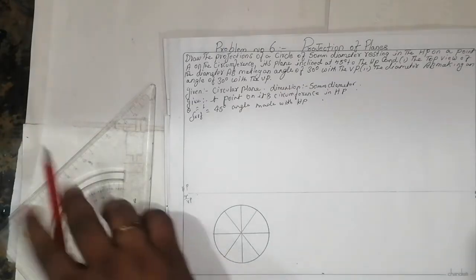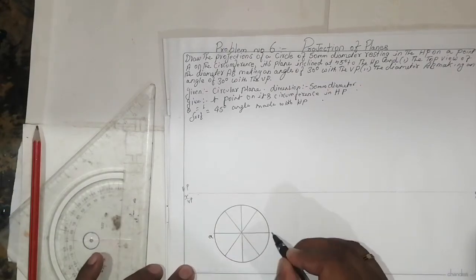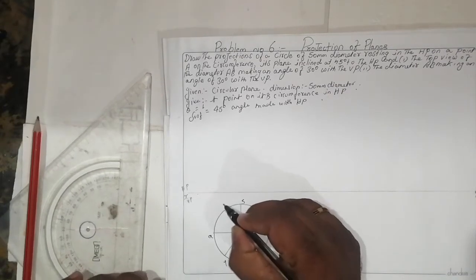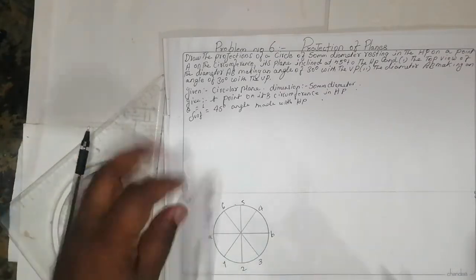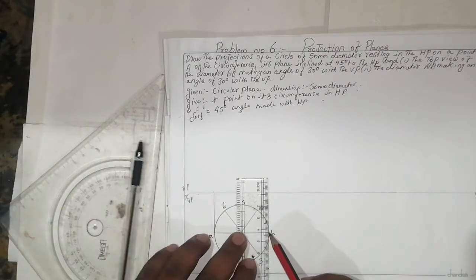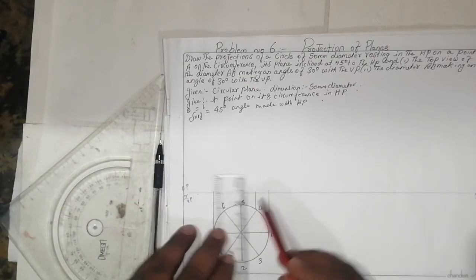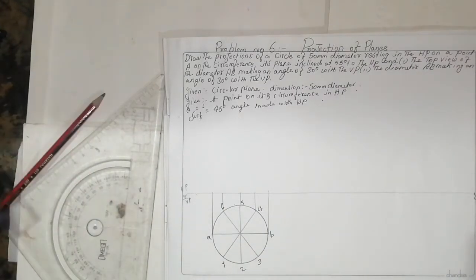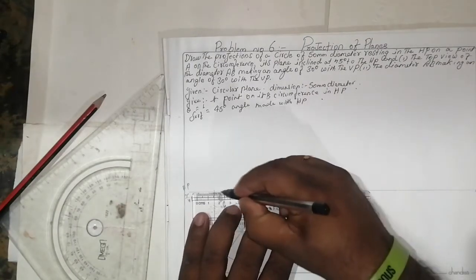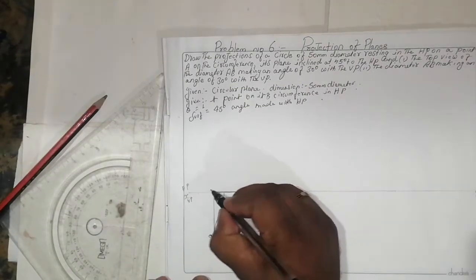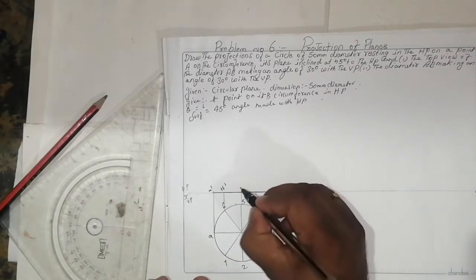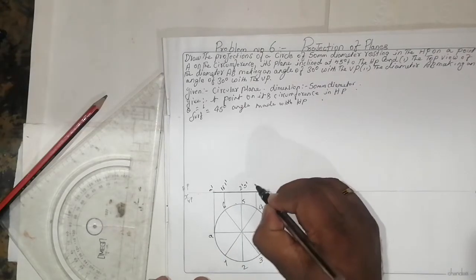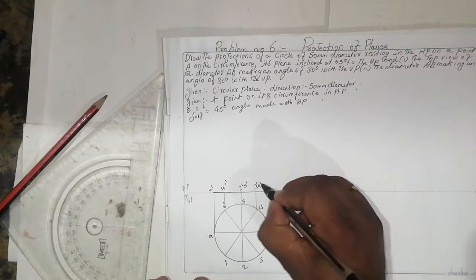Divide the circle into parts and label them as A, B, 1, 2, 3, 4, 5, and 6. Draw projection lines using orthographic view. Mark the projected points as A-dash, 1-dash, 6-dash, 2-dash, 5-dash, 4-dash, 3-dash, and B-dash.